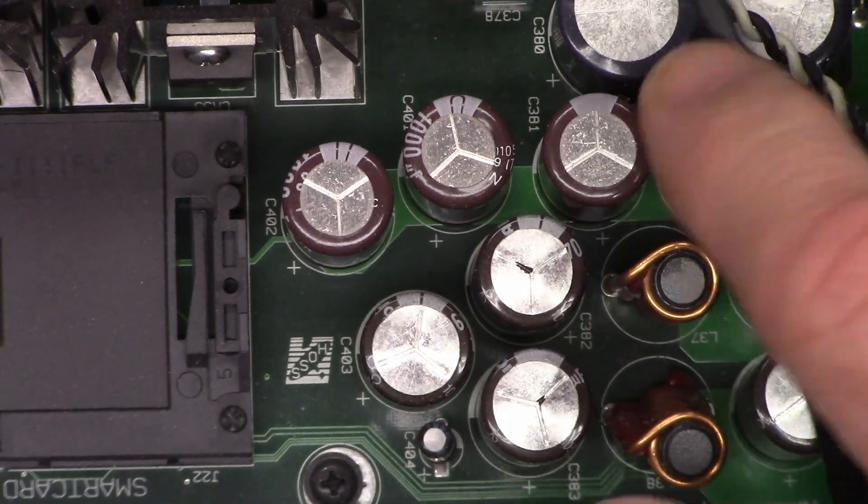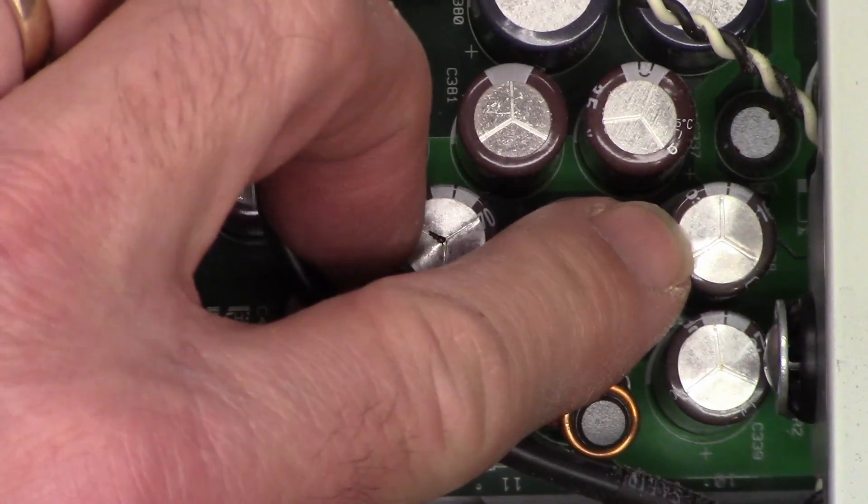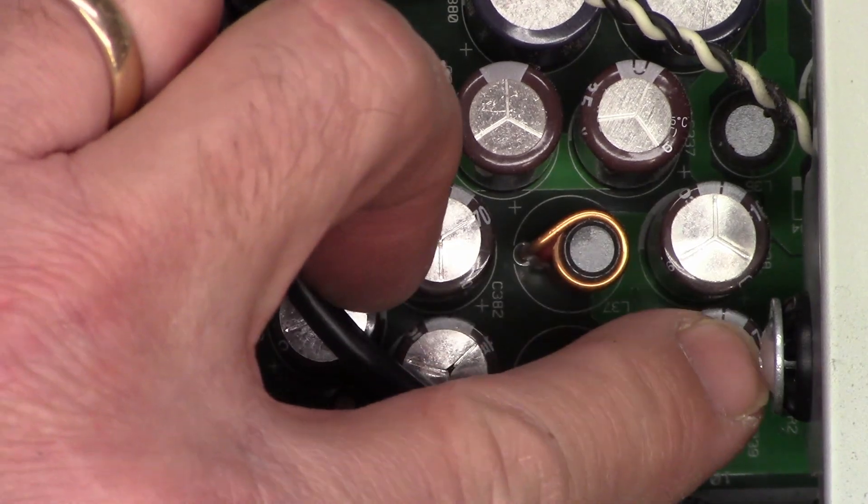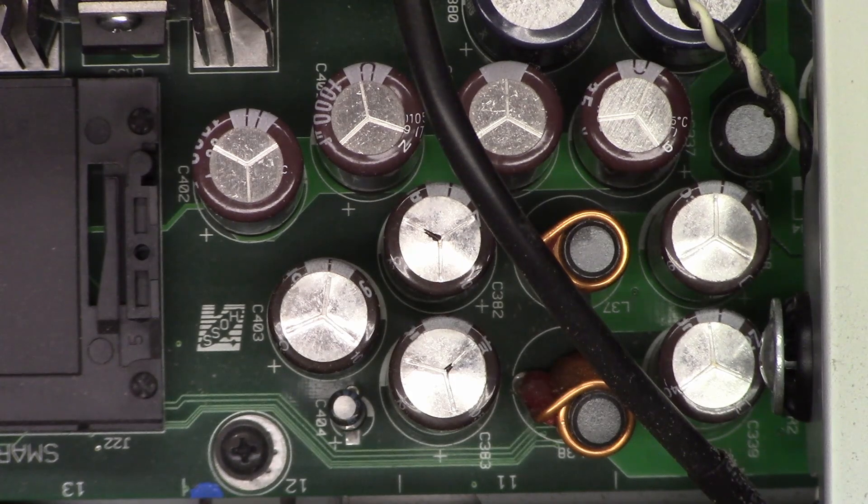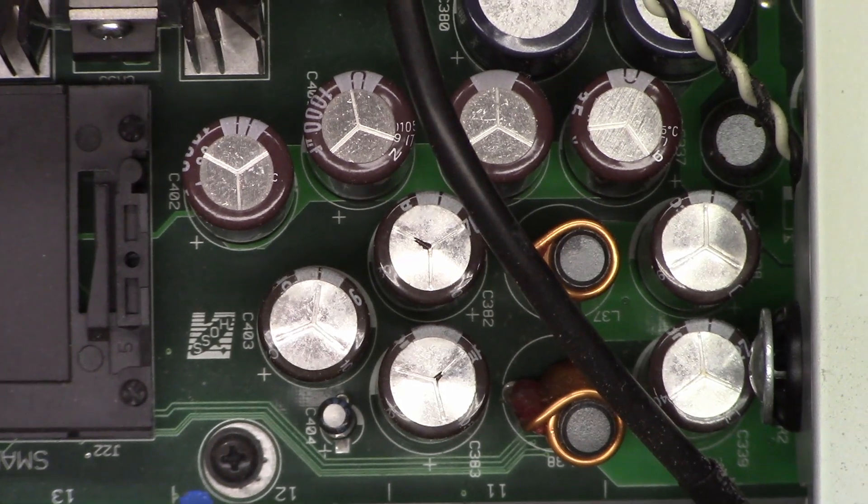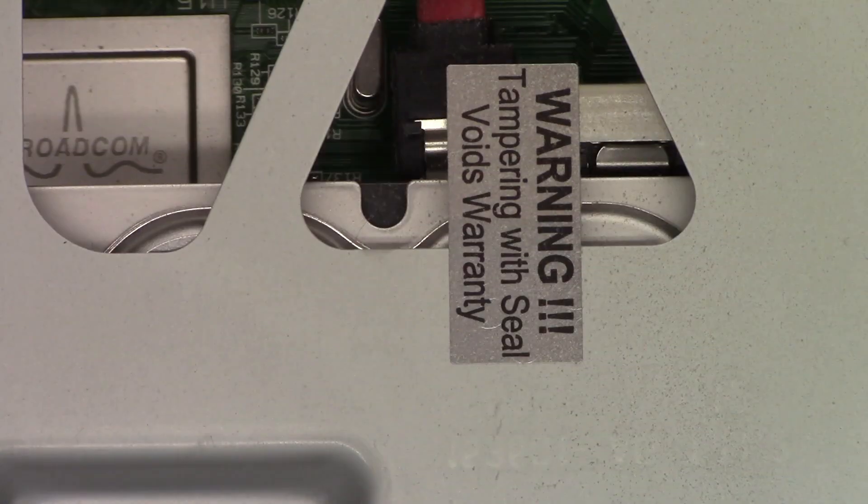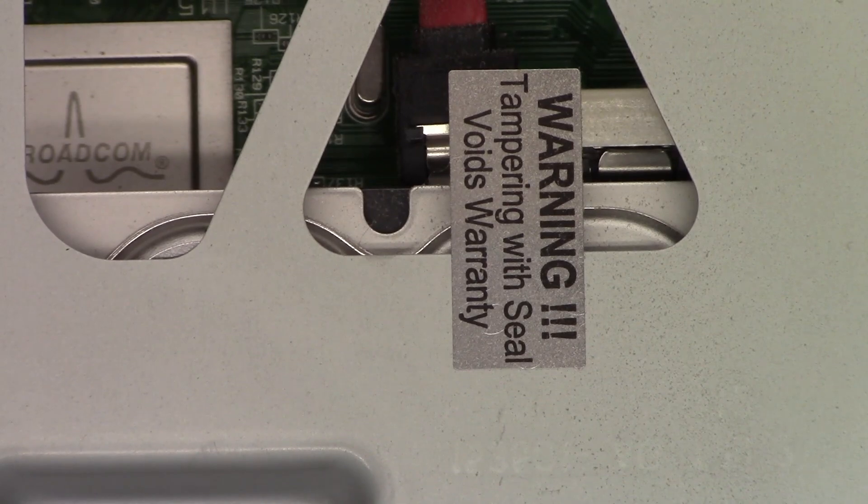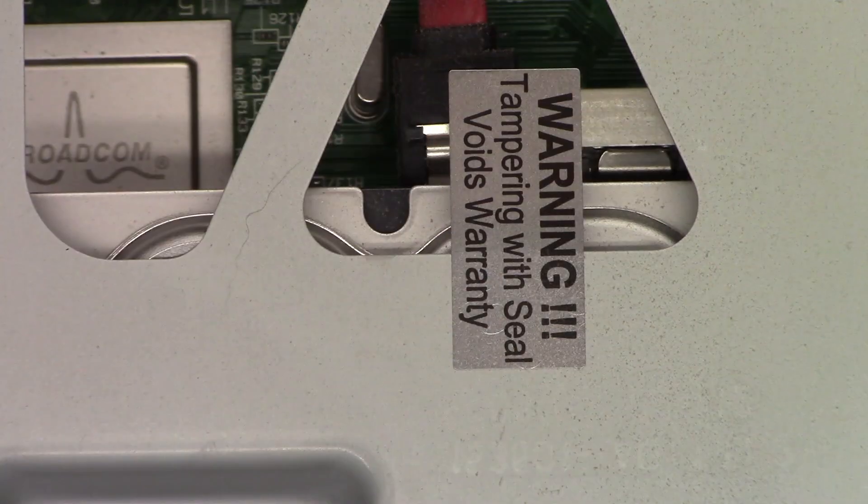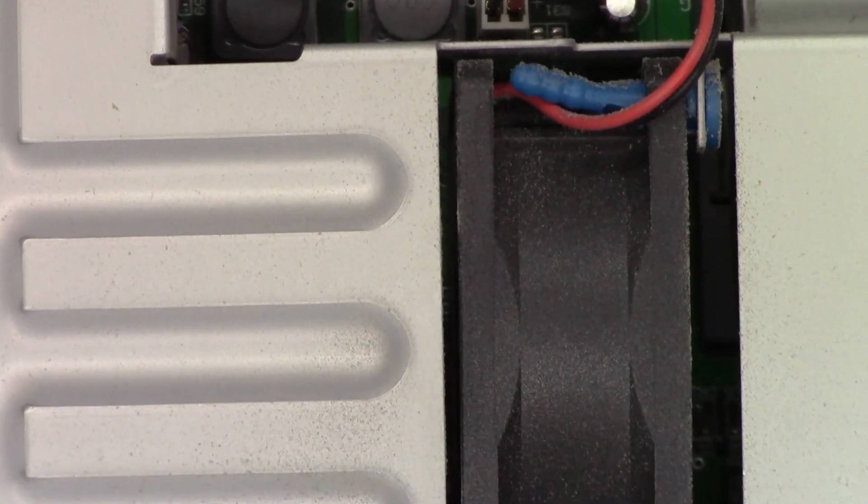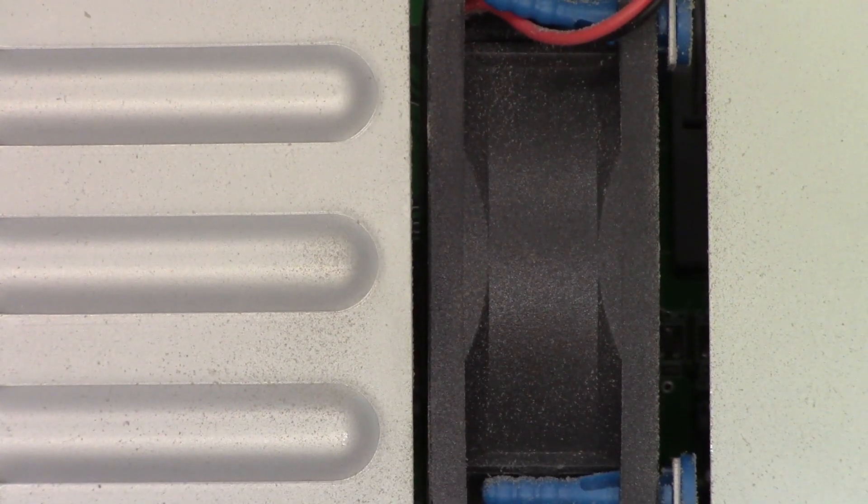These two caps right here as well are bulged. I think they're just used up. We're going to have to pull this board out of this thing and check all these caps and see what shape they're in. There's the hard drive. It sits under this cover right here. This is interesting. Tampering with the seal voids the warranty. Well, I guess my warranty is void then. It's not attached to anything. They do have a cooling fan to cool the hard drive.